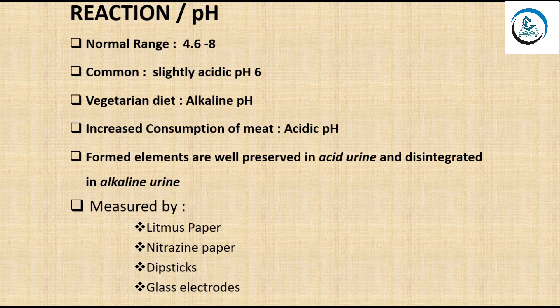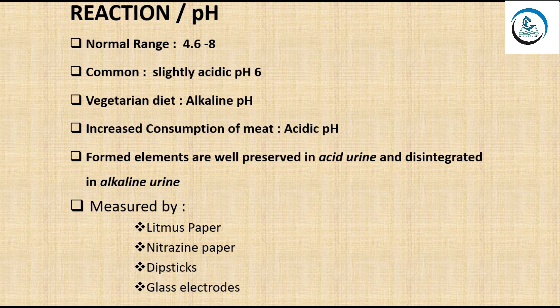The normal pH range of urine is 4.6 to 8; commonly it is slightly acidic at pH 6. People following a vegetarian diet tend to have a slightly alkaline pH, while increased meat consumption causes acidic pH. Importantly, formed elements are well preserved in acidic urine and disintegrate in alkaline urine. Urine pH is measured using litmus paper, nitrosin paper, dipstick, or glass electrodes.